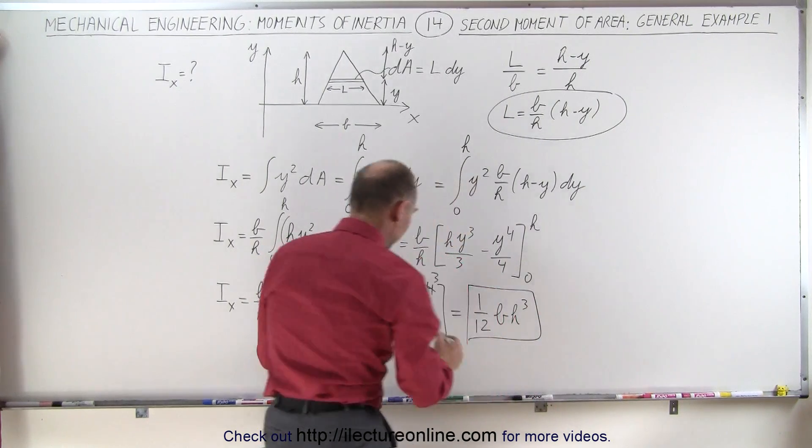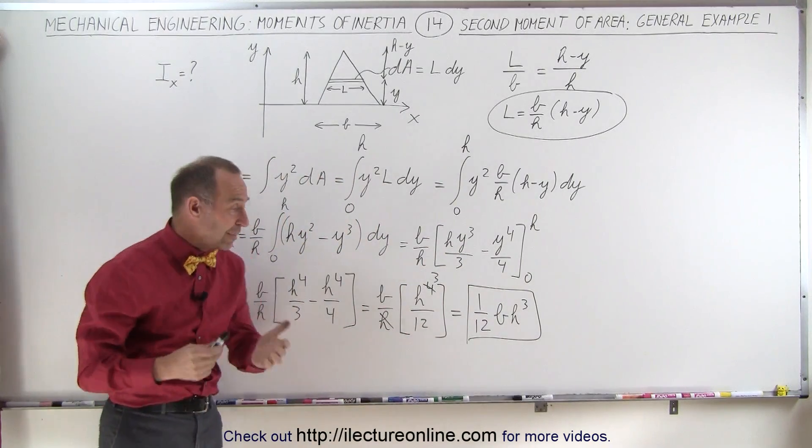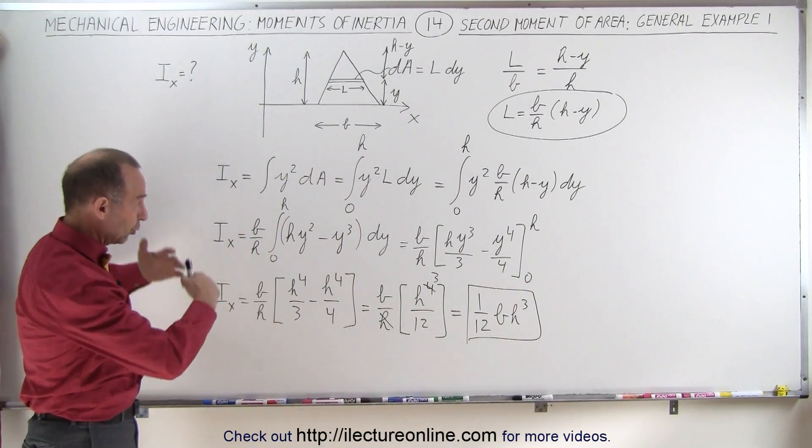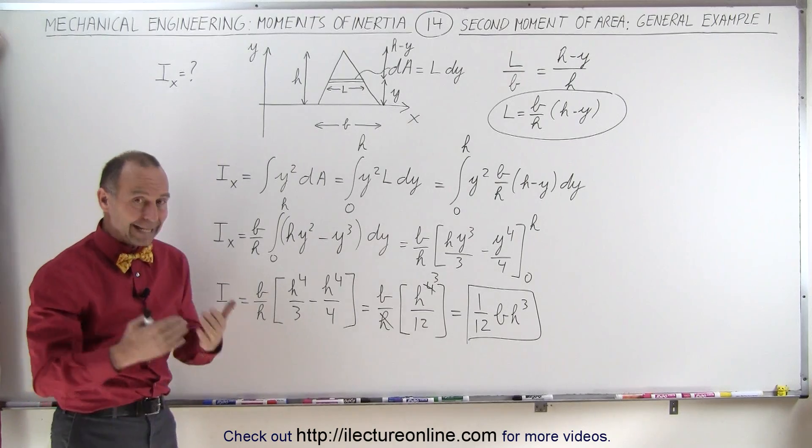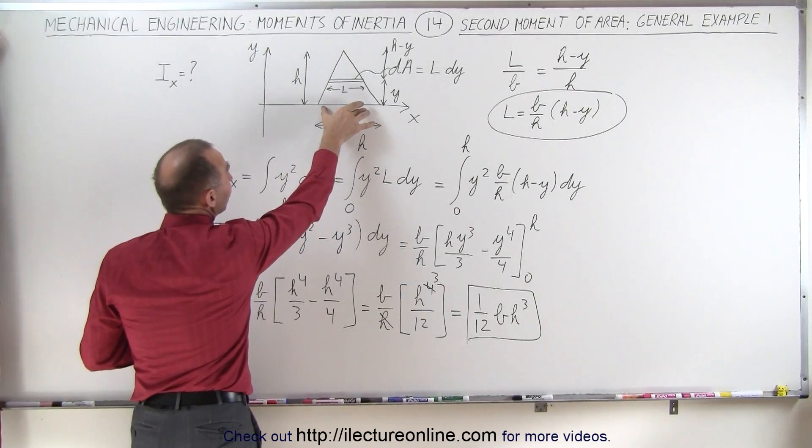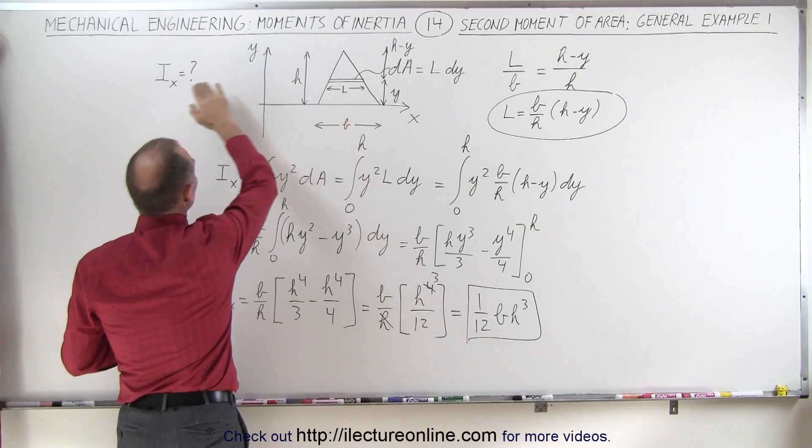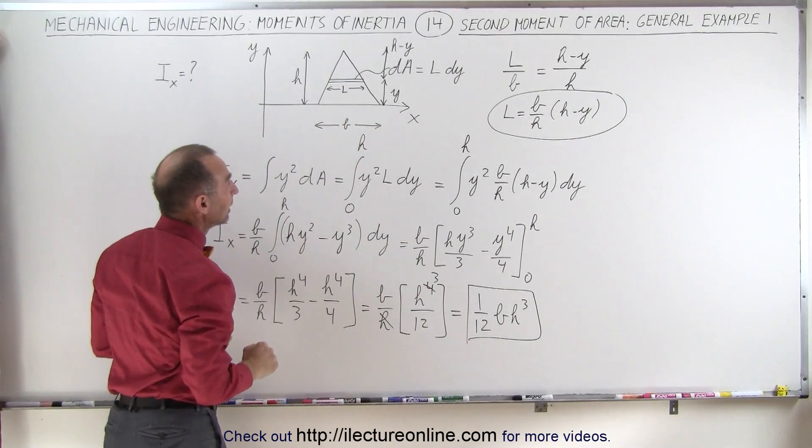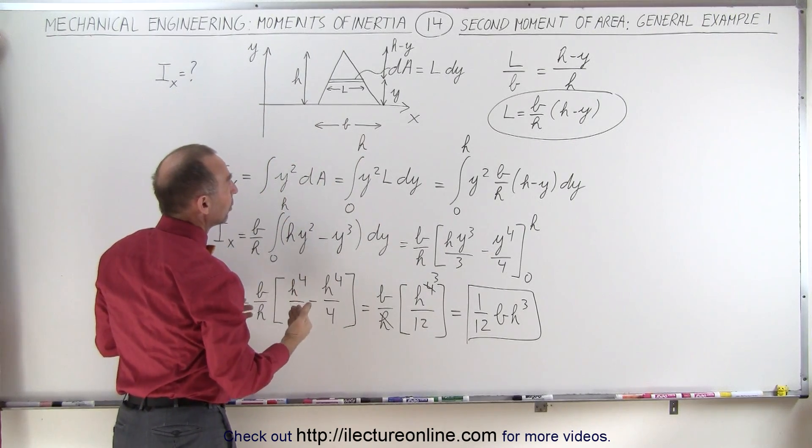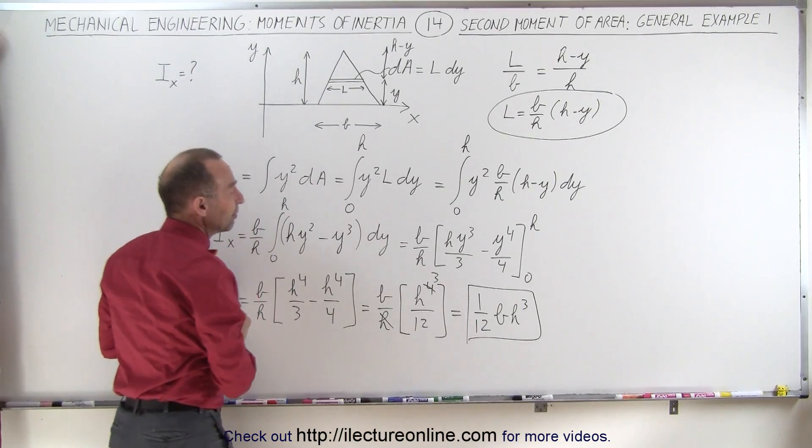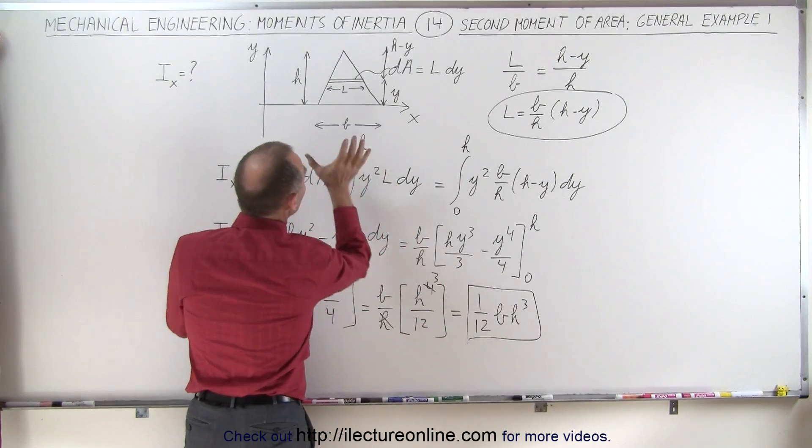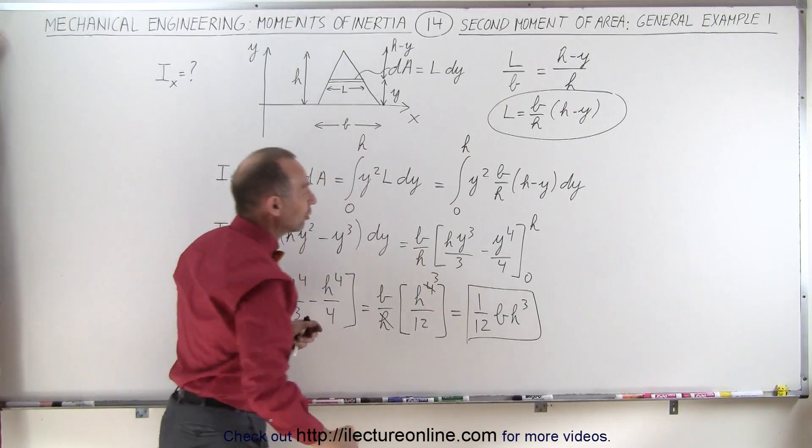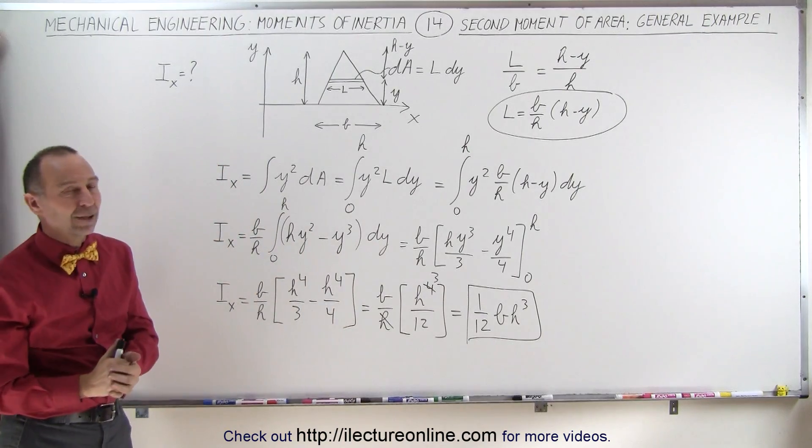Again, if this was in standard units, we would have meters to the 4th power, but since we're doing this in general, any triangle that has its base on the axis that you're referencing to, when you're trying to find the second moment of area, any triangle of any shape, the second moment of area can be found to be 1/12, the length of the base, times the height cubed. And that's how it's done.